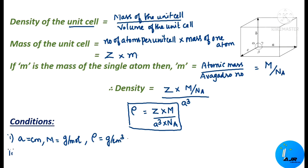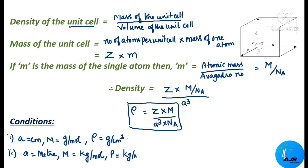The second condition is: if the edge length A is given in meters and the capital M value is given in kilogram per mole, then the density will be given in kilogram per meter cube.